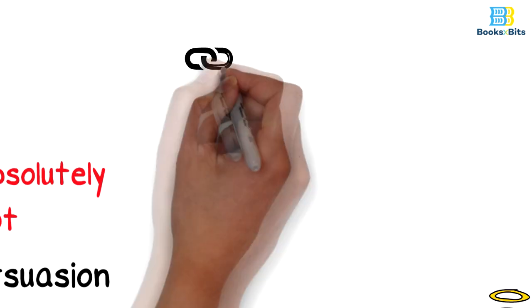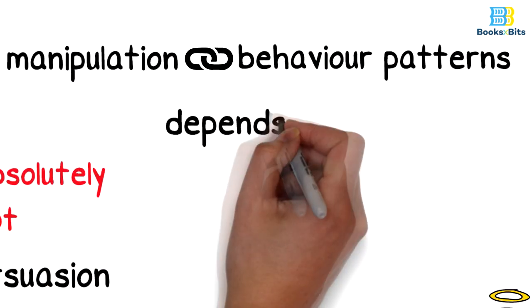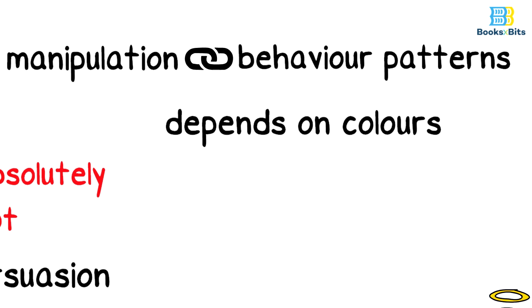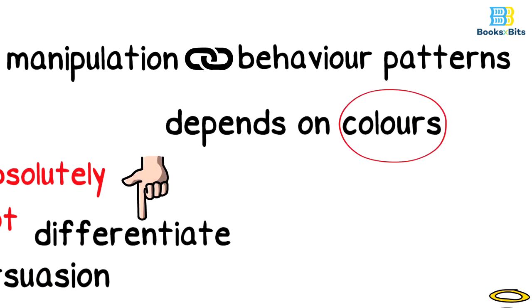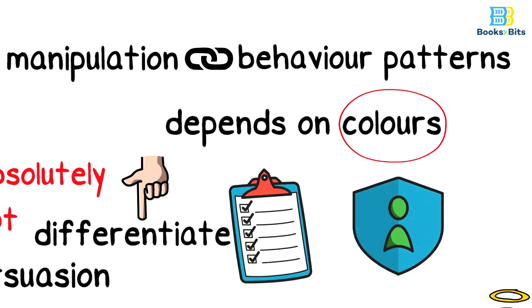In order to make a connection between manipulation and behavior patterns that depends on colors, it is necessary to refer to the manipulations resulting from these colors in order to differentiate easily and therefore require many methods of protection.